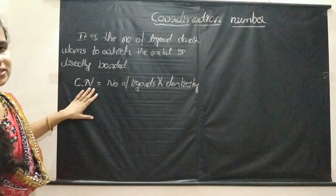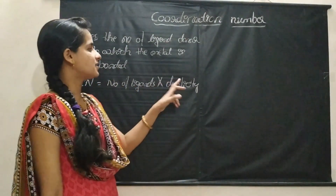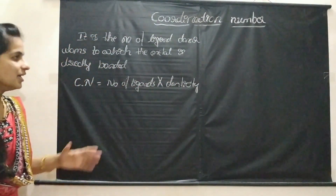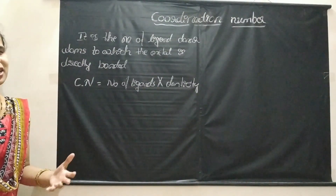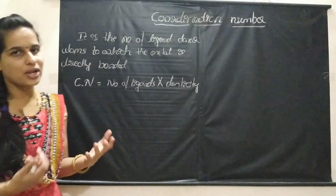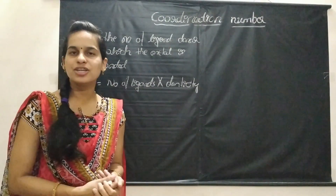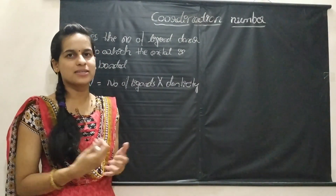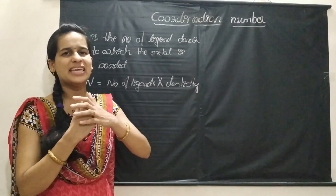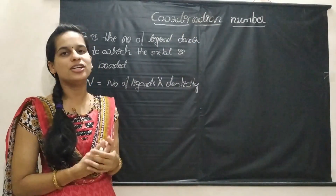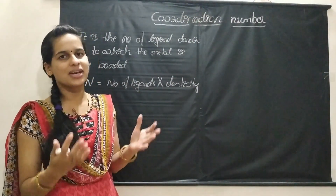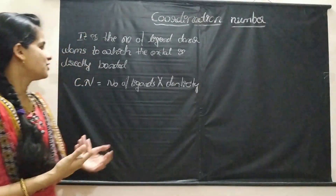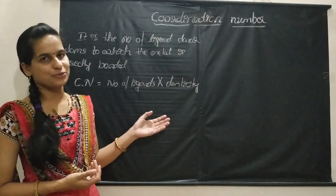We can easily calculate the coordination number by using this formula: coordination number is equal to number of ligands multiplied by denticity. Actually, this formula is not strictly necessary — if you solve the coordination number for 15 to 20 complexes, you can easily calculate it just by looking at the complex itself. But it is better to know this formula.